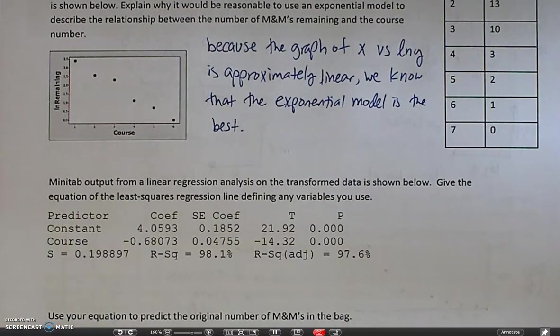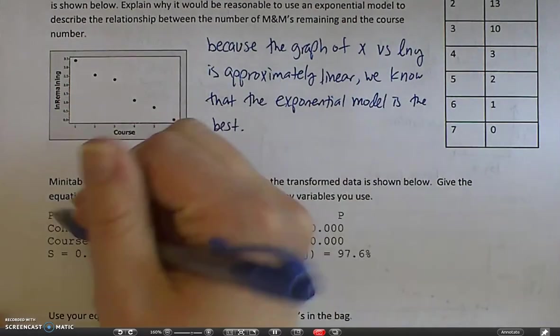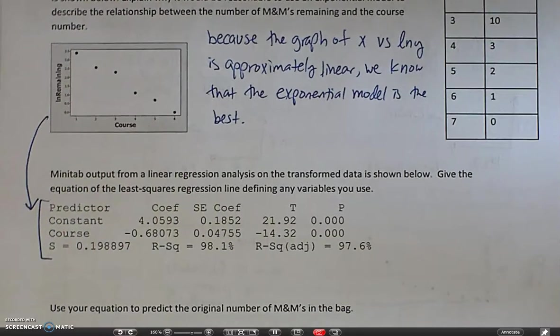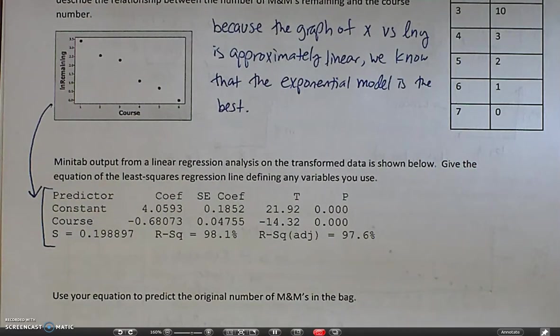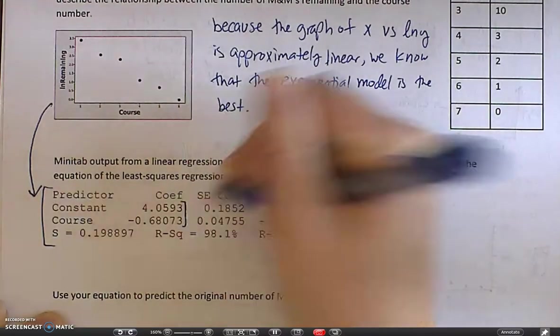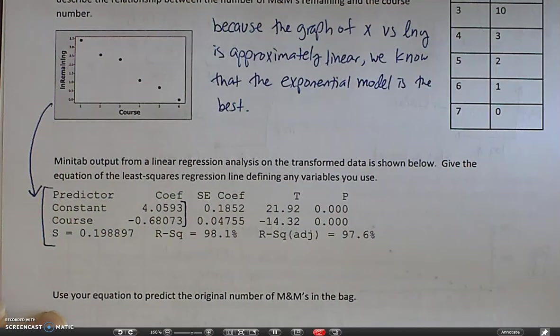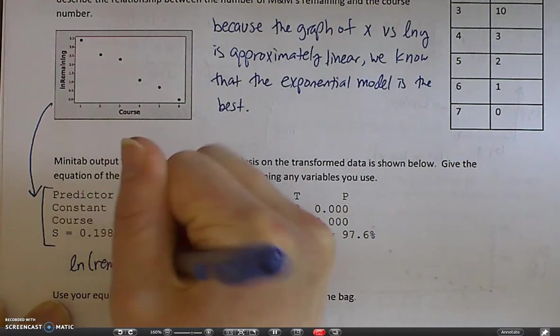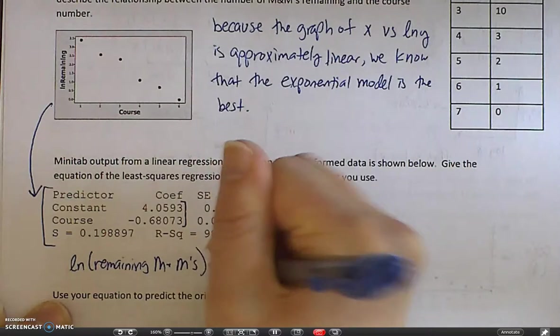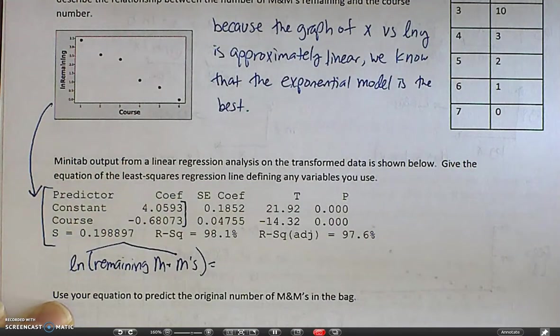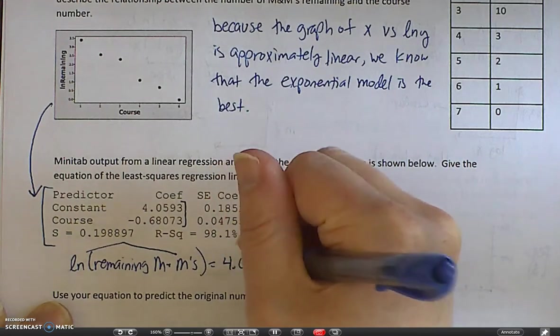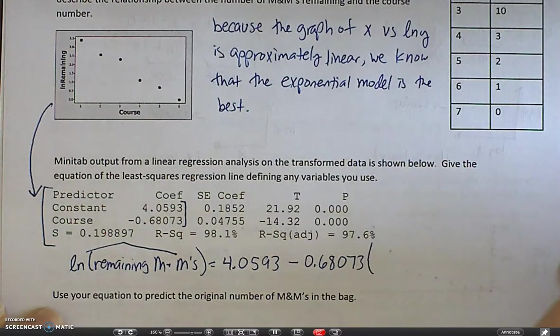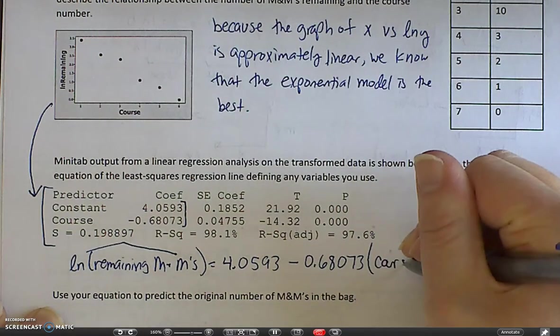Now, this computer output from a linear regression analysis on the transformed data is shown below. So this data came from this transformed data. We want to give the equation of the least squares regression line defining any variables you use. So remember where your important stuff is. Your important stuff is going to go right here. The top one is your Y-intercept. The bottom one is your slope. Now, because my data has been transformed, we have the natural log of my remaining M&Ms. Don't forget your hat. It's going to be equal to my Y-intercept first, 4.0593 minus 0.68073. And then we didn't do anything to the X's, so we can simply just write course number.